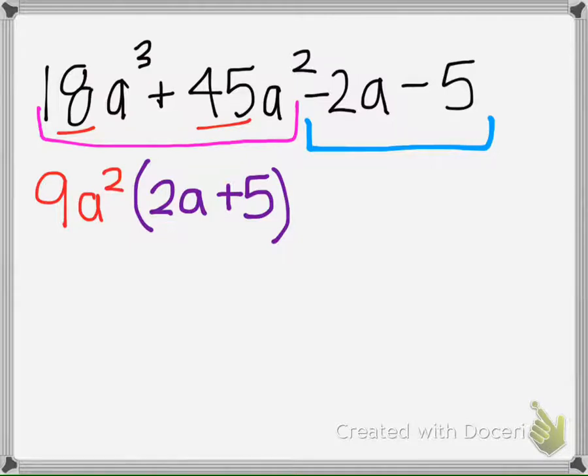Now here, is there a number that goes into 2 and 5? The highest number that goes into 2 and 5 is 1, so they have nothing in common, so I need a 1. And then 1 times negative 2A is negative 2A, but then these won't match.